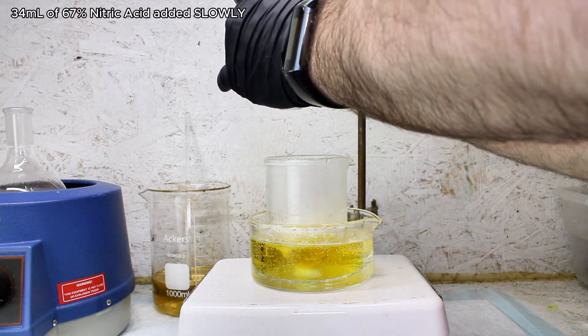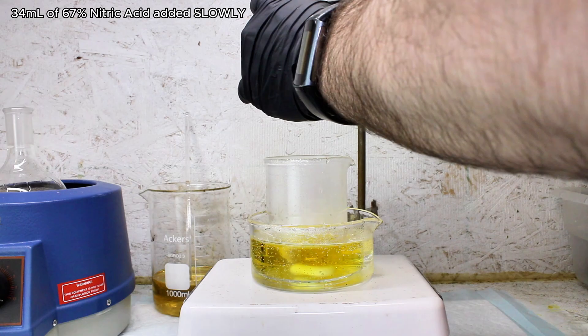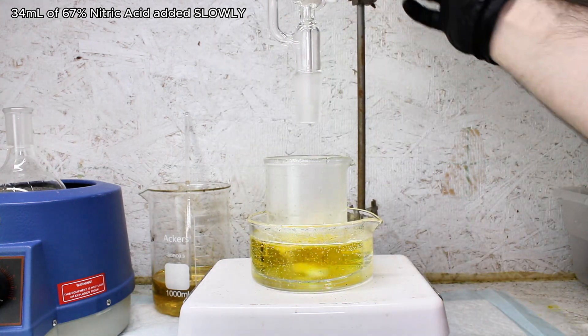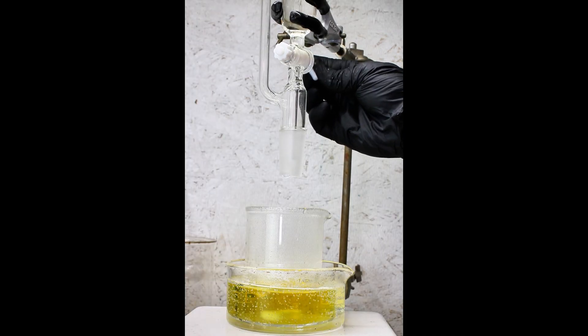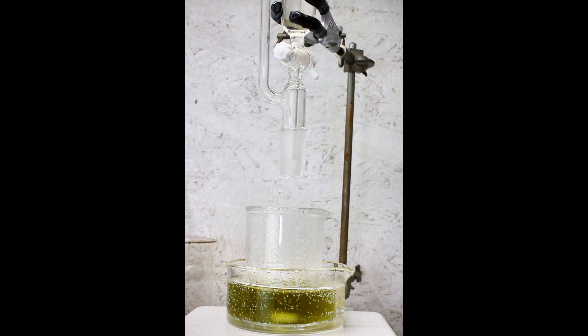Next, I slowly added 34 milliliters of 67% nitric acid using an addition funnel. This immediately caused the solution to turn green, which turned darker over time, and by the time all of the nitric acid had been added, the solution was a very dark and indiscernible color.